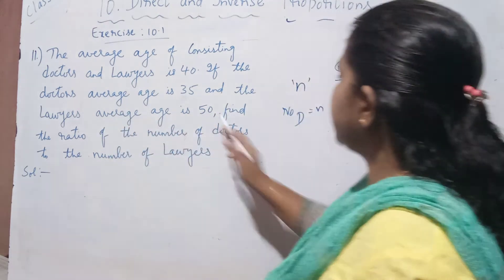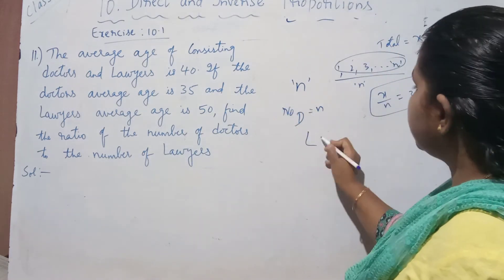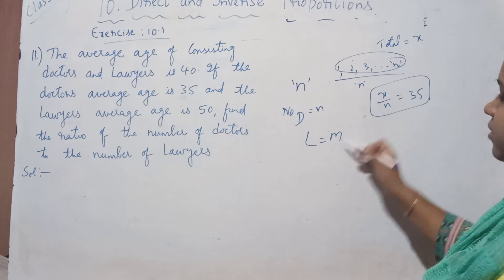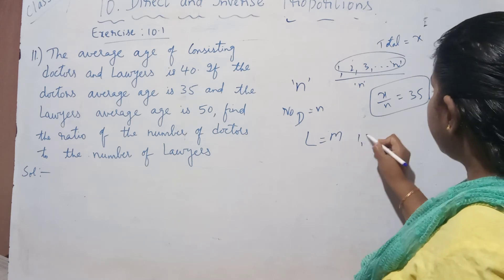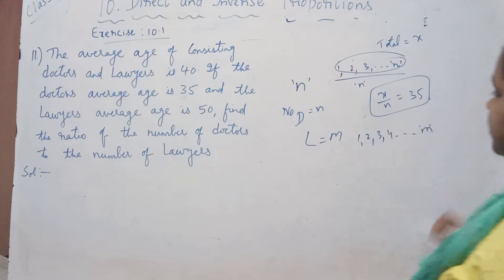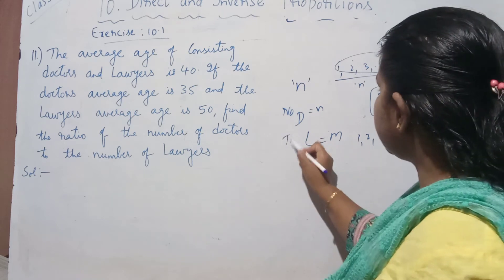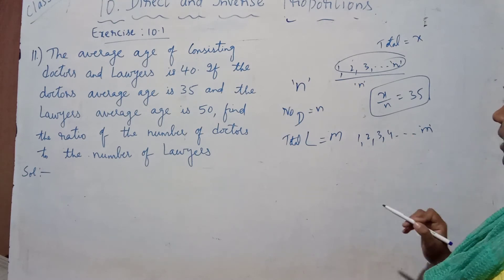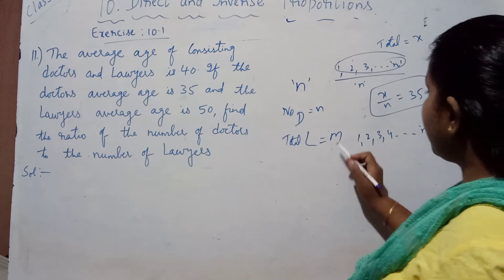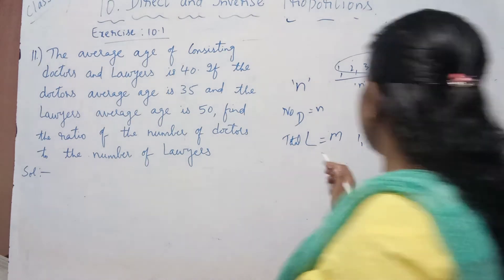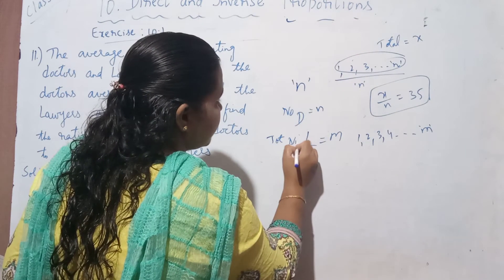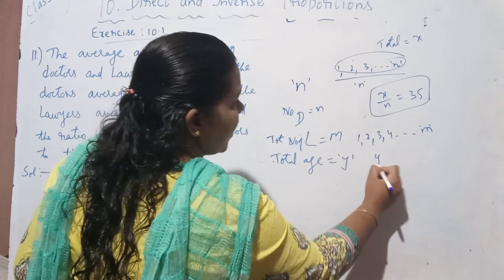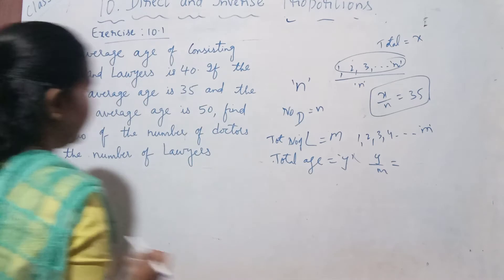The average age of the lawyers is 50. We don't know the number of lawyers either, so let us take there are m lawyers. The total age of all m lawyers summed together we take as y. So the total age by the number of lawyers, that is y by m, is given as 50.